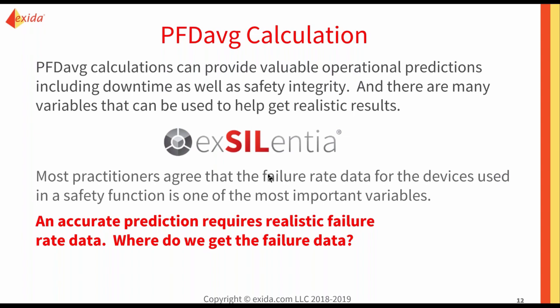There are many variables that must be used or can be used to get realistic results. If you actually want to use this analysis for economic optimization, you should be as accurate as possible and defensible when your management asks questions. Excelentia is one of the tools in the Excelentia suite that deals with all the variables that Exeter has recognized after studying literally thousands and thousands of field failure reports over the last 20 to 30 years. Most practitioners agree that failure rate data for the devices used in the safety function is one of the most important of those variables. So we're going to talk about how we get this failure rate data, and we prefer accurate prediction, which requires realistic failure rate data.